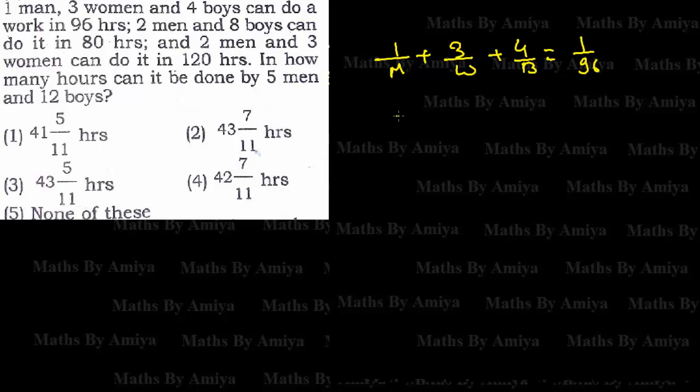I hope this one is clear. Here, two men plus zero women plus eight boys can do work in 1 by 80. And two men plus three women and zero boys can do work in 1 by 120.